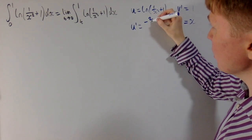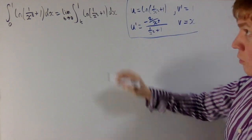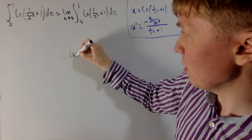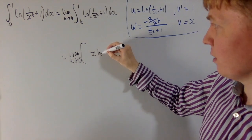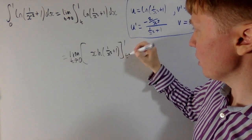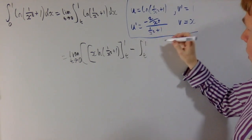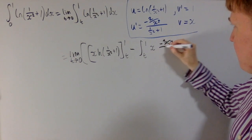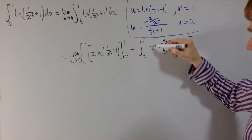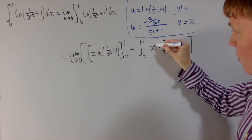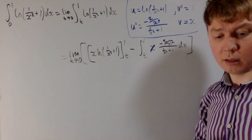When we integrate the 1, we get v equals x. When we differentiate u using the chain rule, we end up with minus 2 over x cubed divided by 1 over x squared plus 1. Applying the integration by parts formula, we get the limit as t goes to 0 of: u times v, which is x ln(1 over x squared plus 1) evaluated between t and 1, minus the integral from t to 1 of v times u'. That is, x times minus 2 over x cubed over 1 over x squared plus 1. We can tidy this up — multiplying x by one of the 1 over x terms turns x cubed into x squared.